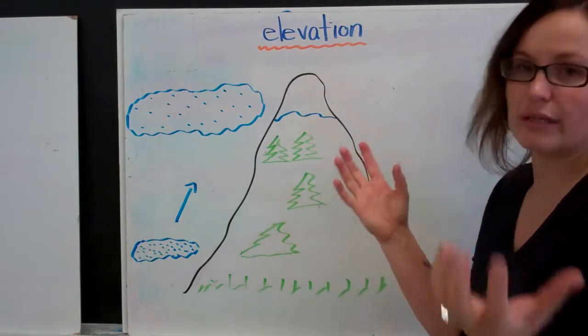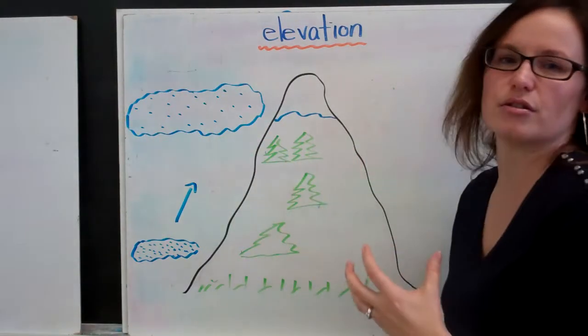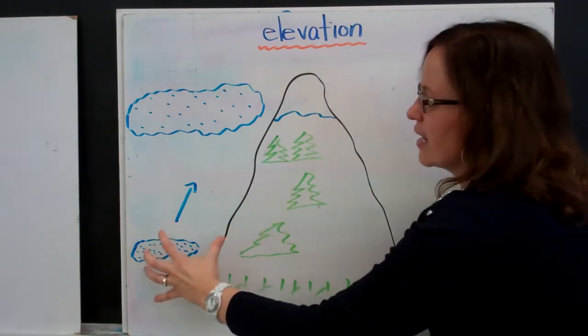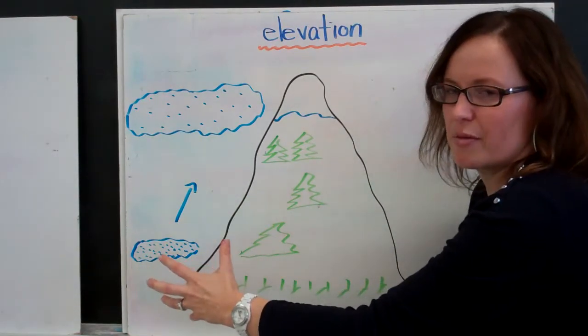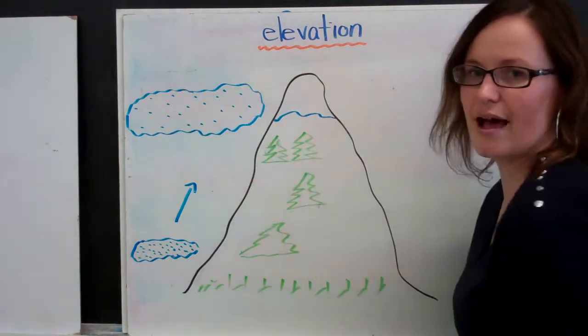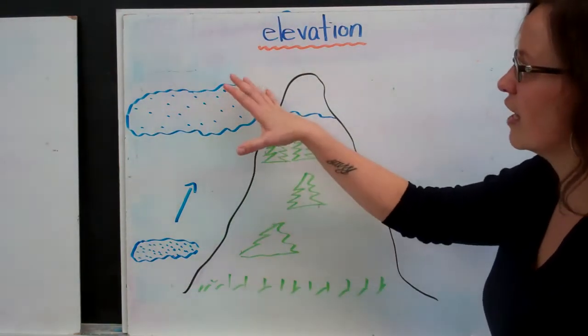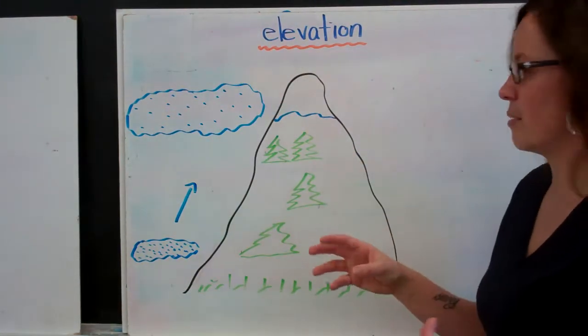Therefore the heat is released and the air mass gets cooler. Now it doesn't mean that the air mass is hot when it's at the bottom of the mountain. It just means that it contains more heat than it does at the top. So higher elevation equals cooler temperatures.